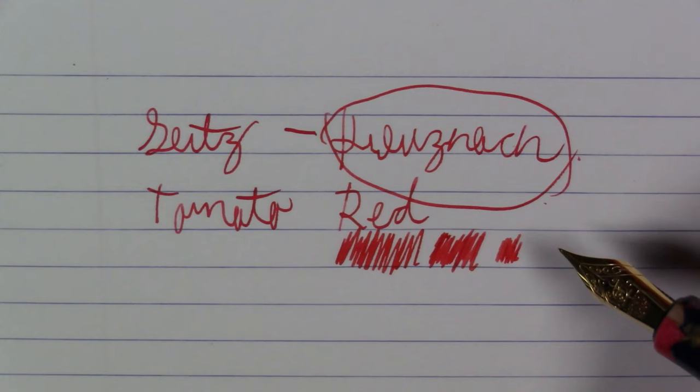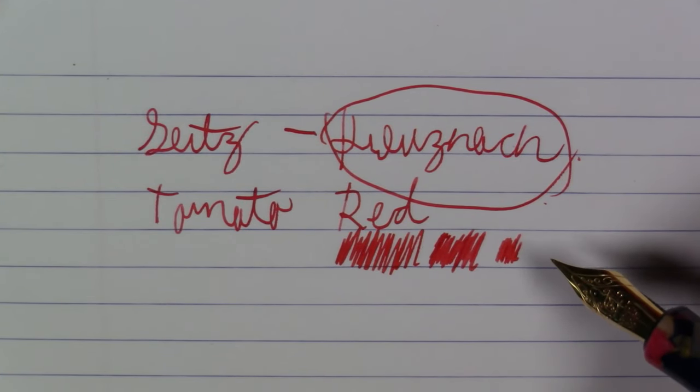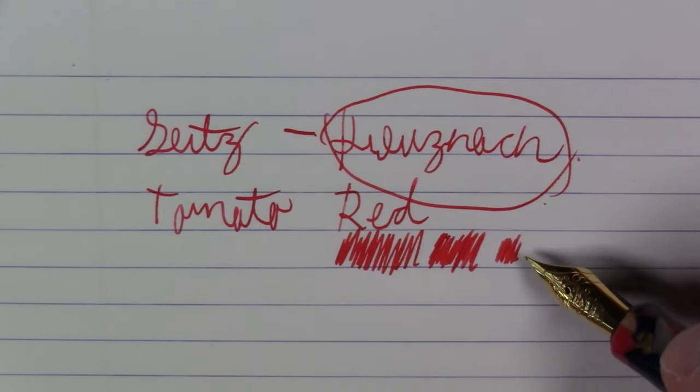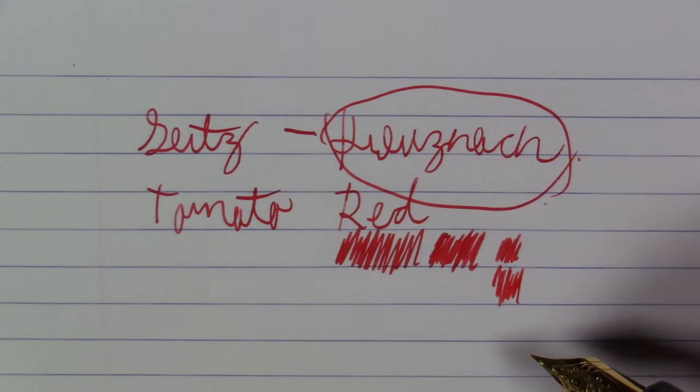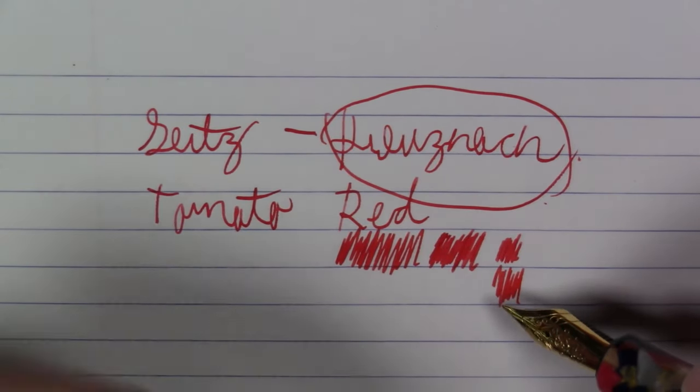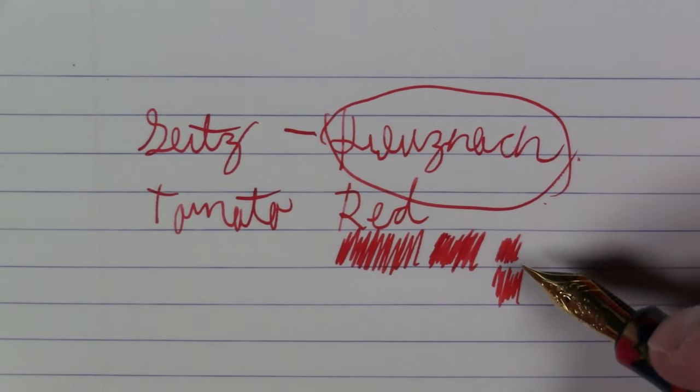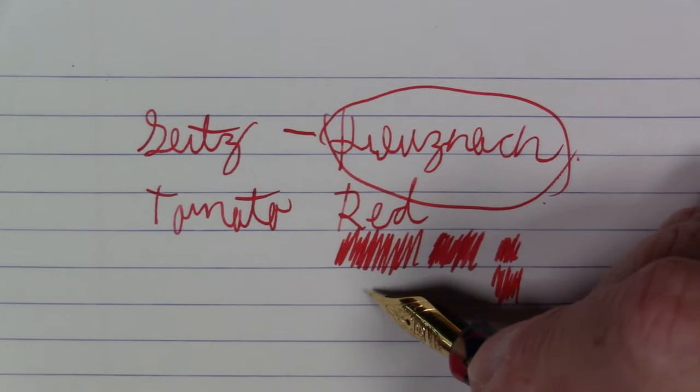I remember when I was a kid, tomatoes were much redder. I think genetic engineering of tomatoes over the decades to make them less perishable for transportation has made them a lot more orangey and a lot less red. So I think this looks more like a contemporary tomato than a tomato from a few decades ago, which were much, much redder, at least as I seem to recall.